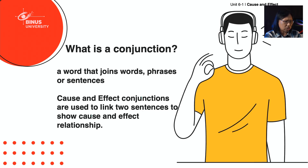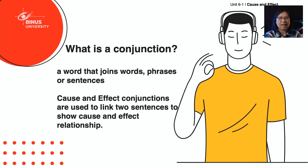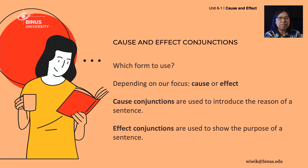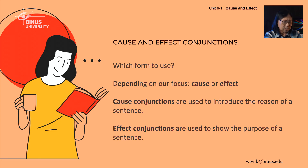Cause and effect conjunctions are used to link two sentences to show a cause and effect relationship. Remember that the form we use depends on our focus — whether we focus on the cause or on the effect. Cause conjunctions are used to introduce the reason of a sentence, and effect conjunctions are used to show the purpose of a sentence.